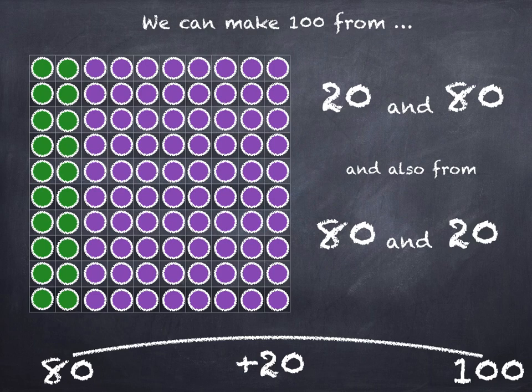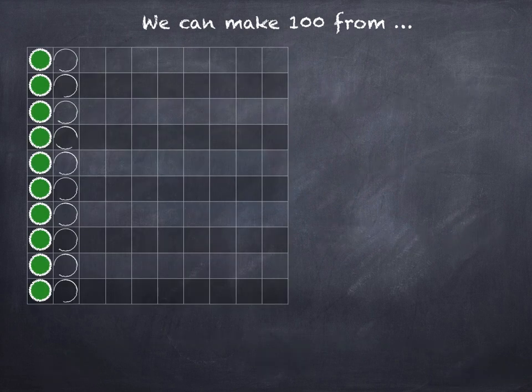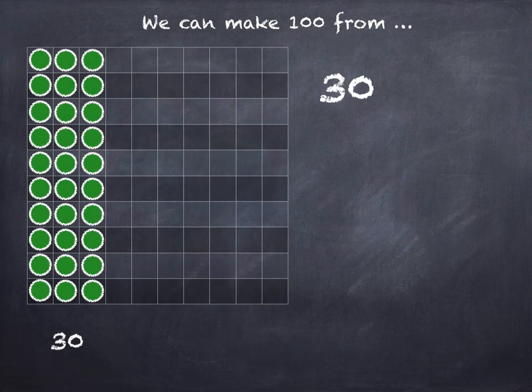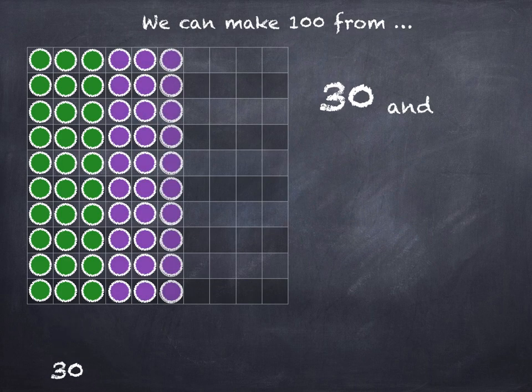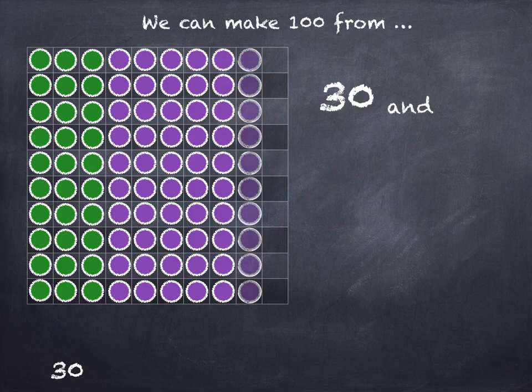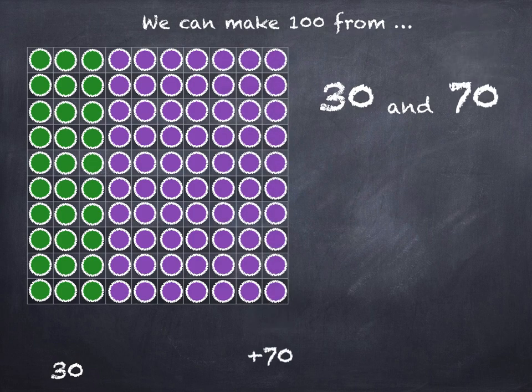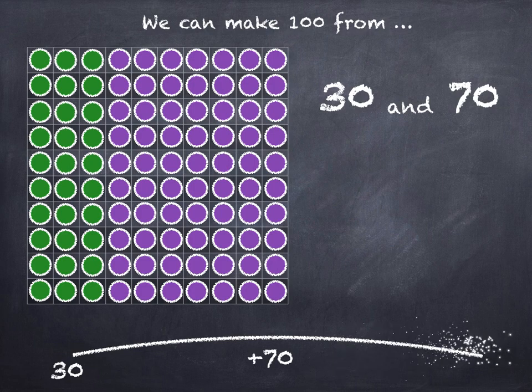We can make 100 from 30 and 70. 30 plus 70 is 100.